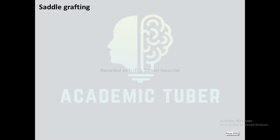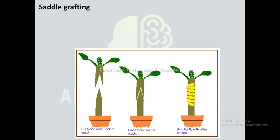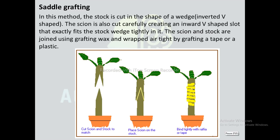Finally, saddle grafting: In this method, the stock is cut in the shape of a wedge. The scion is also cut carefully, creating an inward inverted V-shape slot that exactly fits the stock tightly within it. The scion and the stock are joined using grafting wax and wrapped airtight by grafting tape or plastic.